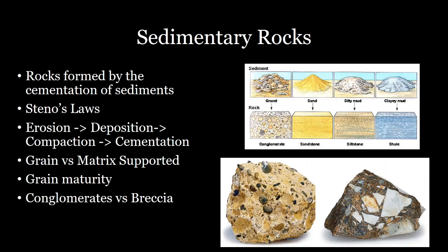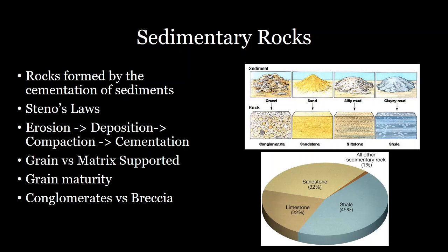For example, a breccia could form from landslide material, whereas a conglomerate would come from material that's been transported and had its grains rounded. In terms of the distribution of sedimentary rocks throughout the crust, the majority are shale — formed from fine-grained muds and clays — while 22% are limestones, formed from carbonates and shells deposited on the ocean floor. Most of the remaining material is sandstone.